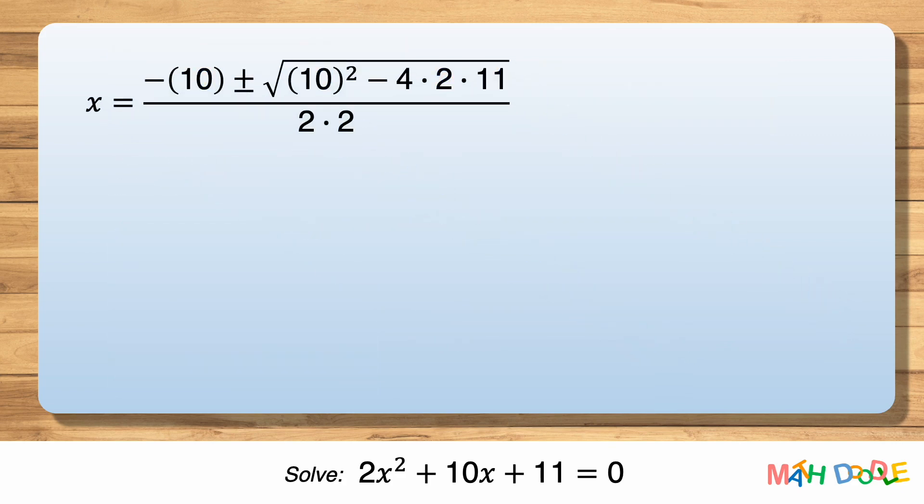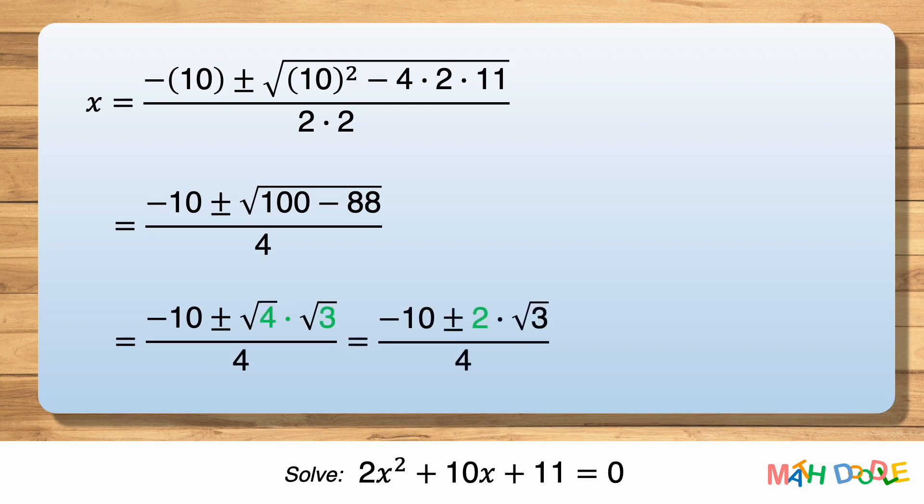Then, let's simplify the equation and solve for X. Let's simplify the radical. 100 minus 88 is 12. We can rewrite square root of 12 as square root of 4 times square root of 3, which can be simplified to 2 square root of 3.